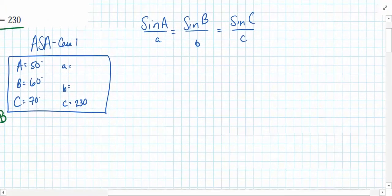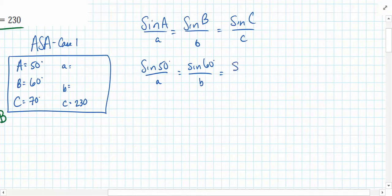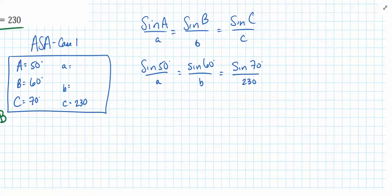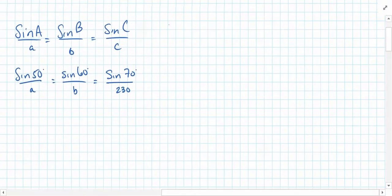Now let's come over here and solve the rest of our calculations. Sine of 50 over A is equal to sine of 60 over B which is equal to sine of 70 over 230. Now a couple of these calculations can be found using our unit circle. But these other two, they're not very common to the unit circle, so we won't be able to do those in our head. Instead, we can use our calculator to solve the unknown side lengths.